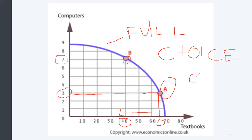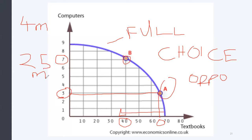When you make a choice, there is an opportunity cost. Moving from A to B, I gained 4 million computers (7 minus 3). But what did I lose? I had 65 million textbooks at A and now I have 40 million at B — so I lost 25 million textbooks. The cost of gaining 4 million computers is the 25 million textbooks I lost. That is the opportunity cost, shown from the graph.